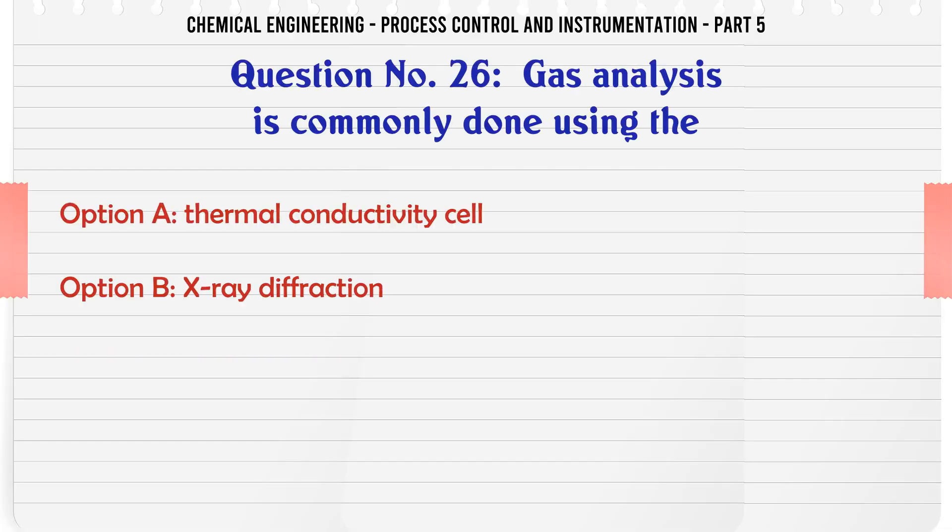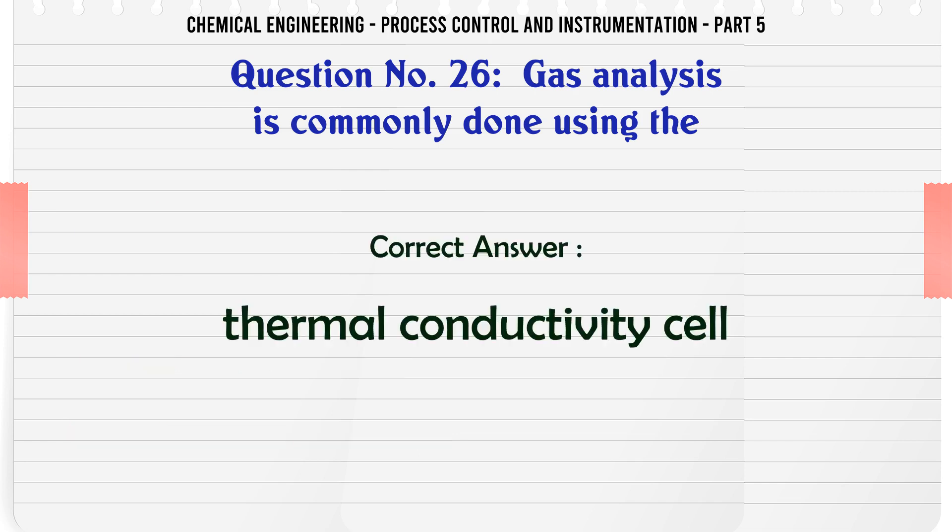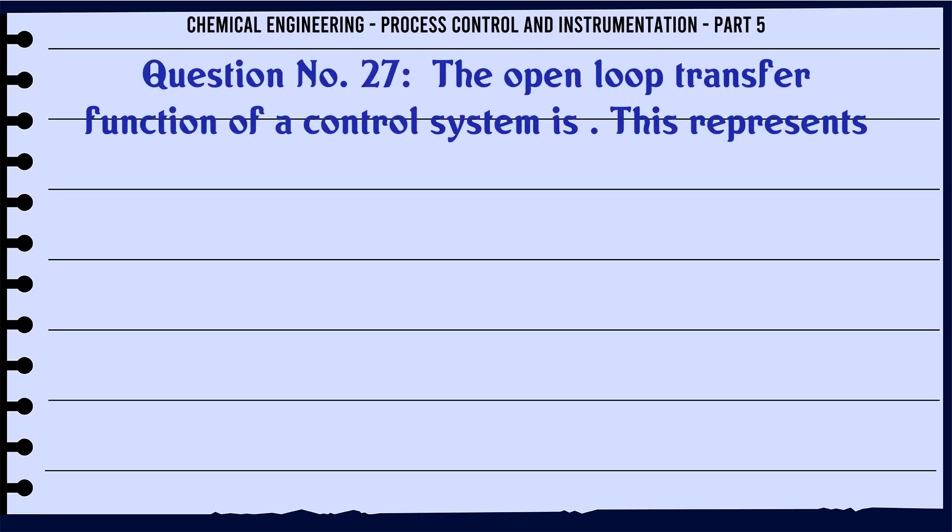Gas analysis is commonly done using the: A. Thermal conductivity cell. B. X-ray diffraction. C. Mass spectrometer. D. Emission spectrometer. The correct answer is Thermal conductivity cell.